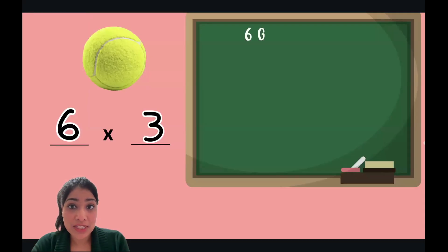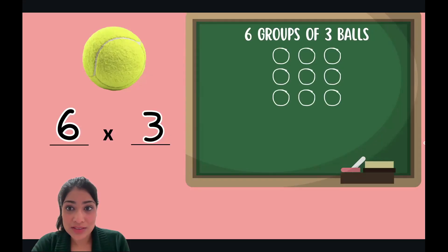Are you ready? Let's play one together. Six times three. This means we have to draw six groups of three balls. Let's draw our first row, and in first row how many balls we need to draw? Three. Let's draw our second row, third, fourth, fifth, and six.